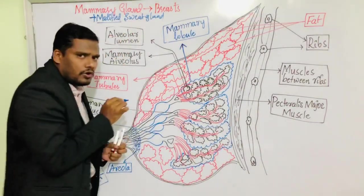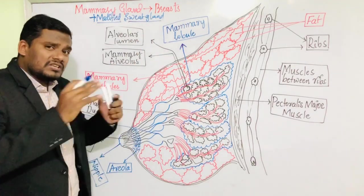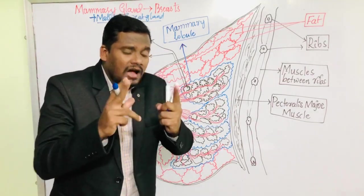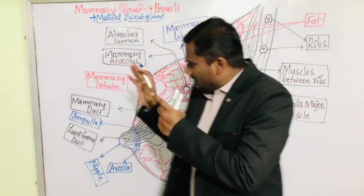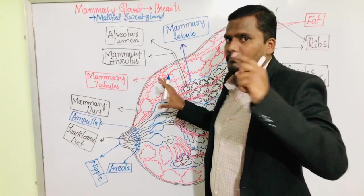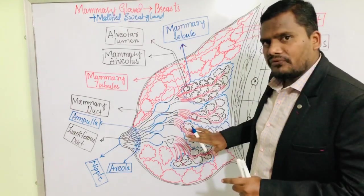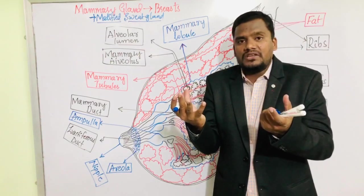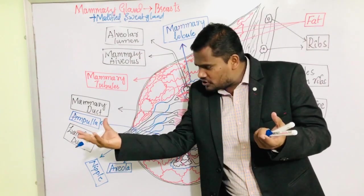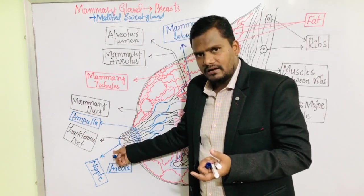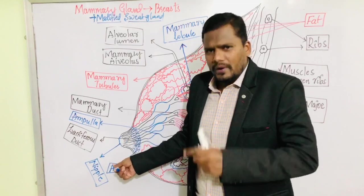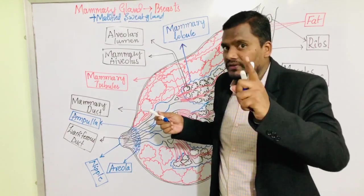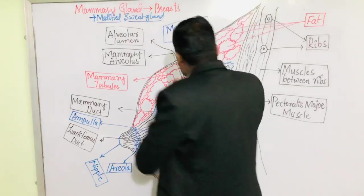Now let us understand the external appearance and internal structure of the mammary glands. The main job of the mammary gland is to produce milk. The milk is formed inside the gland and comes out through the nipple so that the baby can suckle. We will understand the entire pathway of milk inside the mammary gland using a mnemonic trick by the end of this video.